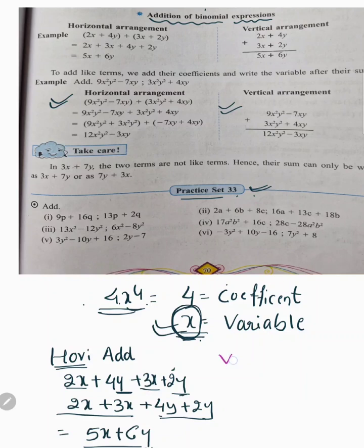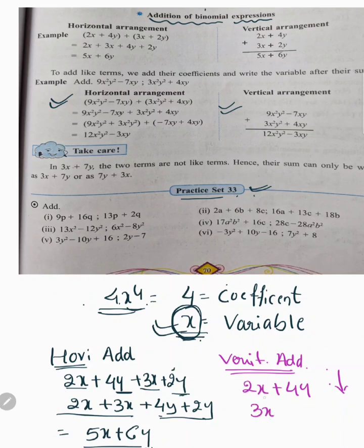Here vertical addition means one term under another. So we take 2x plus 4y written vertically — x variable under x, and y variable under y. Then we add: 4 plus 2 equals 6y, and 2 plus 3 equals 5x.